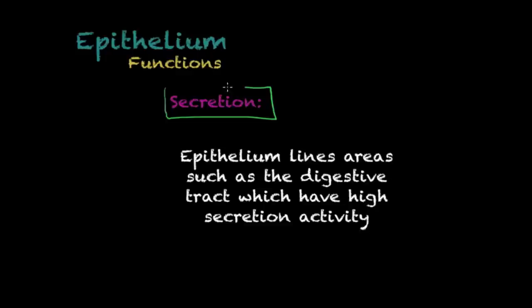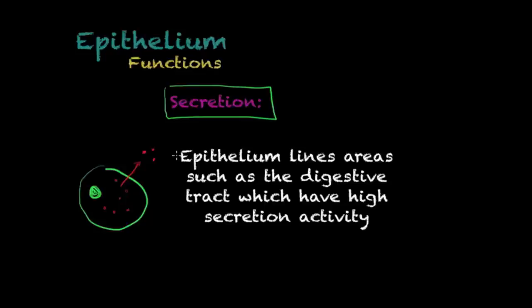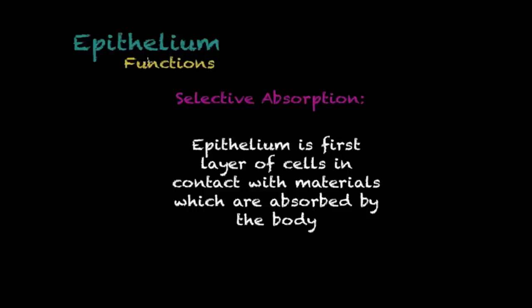The first function is secretion. If you have a cell, cells usually produce substances, and when they release these substances into the environment, this is what we describe as secretion. Epithelial cells are clearly able to carry out this function. In areas such as the digestive tract, you can clearly see a lot of epithelium lining that area where there is high secretion activity, provided by specialized epithelial cells.